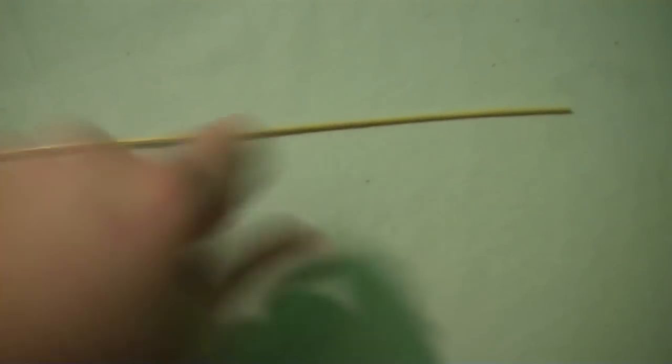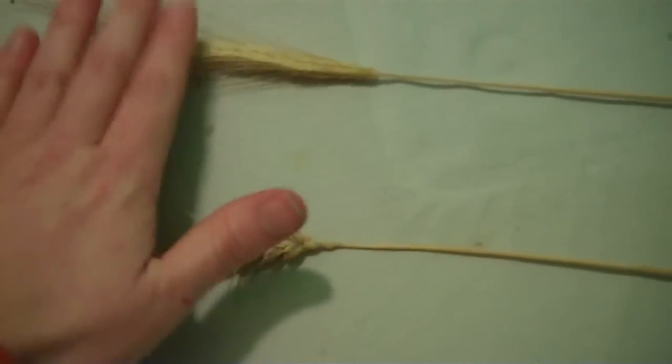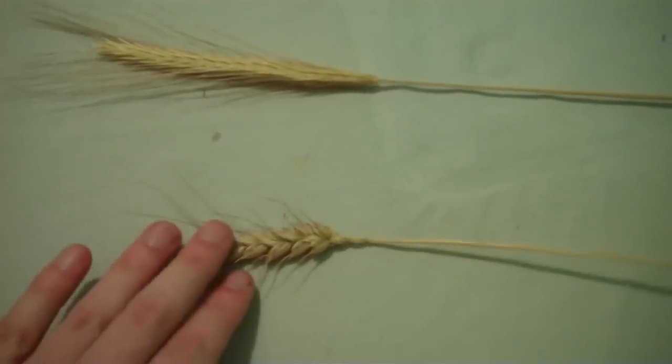As you can see, the rye straw is much longer, several inches, than the wheat straw. Which is good because it means you don't have to change straws as much, but it's also a lot harder to weave with the rye, so it's best to start with the wheat.